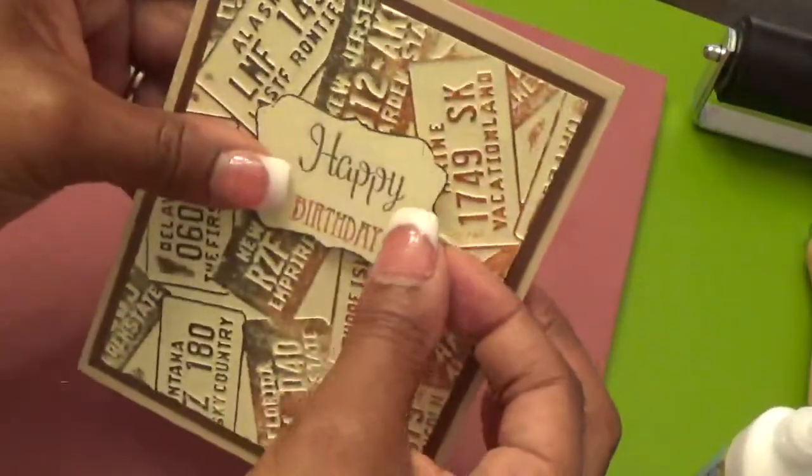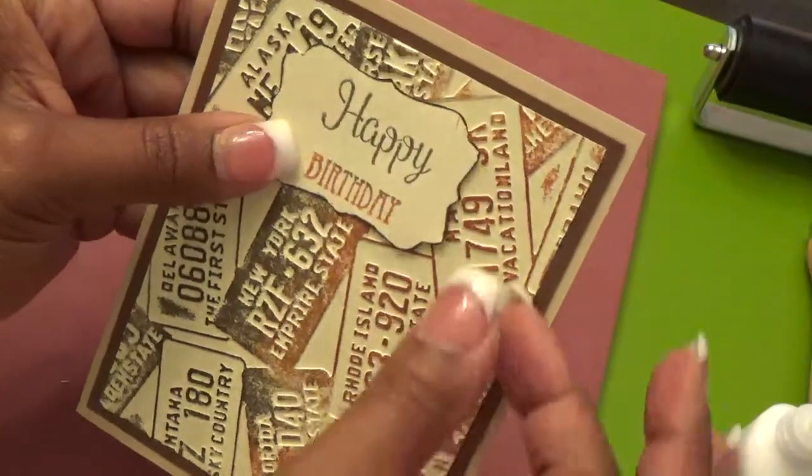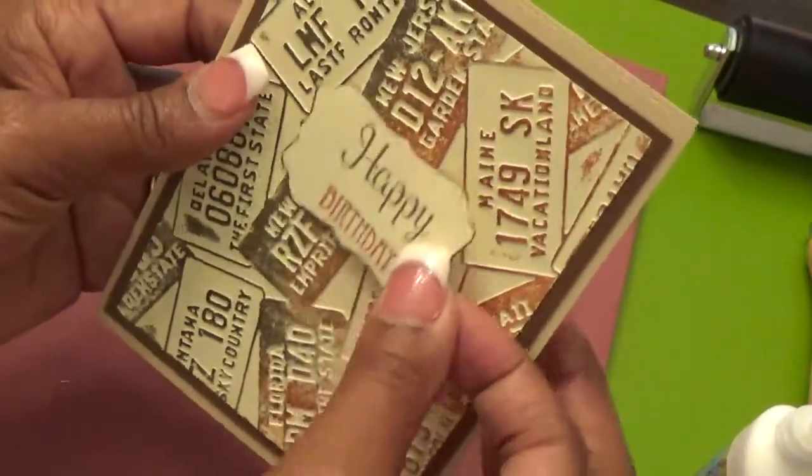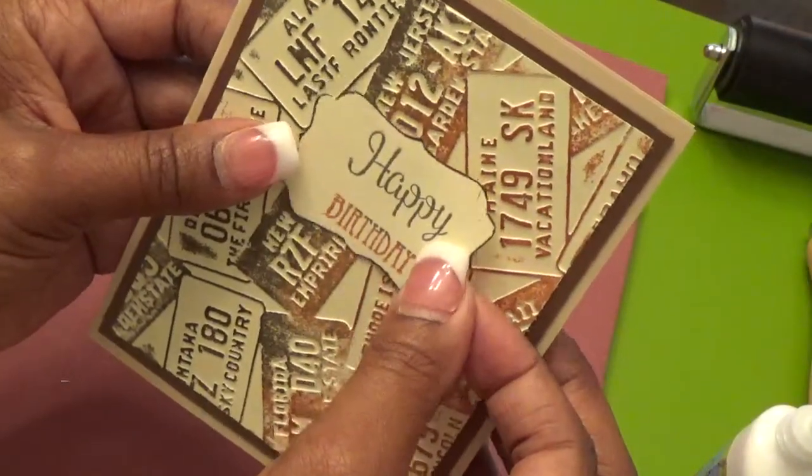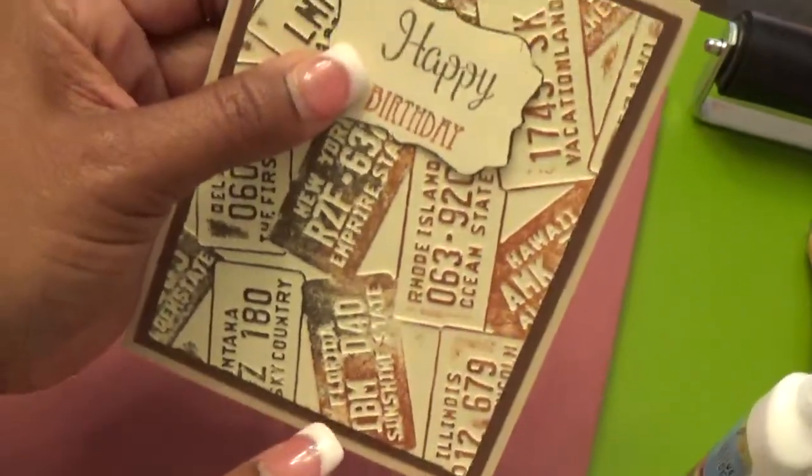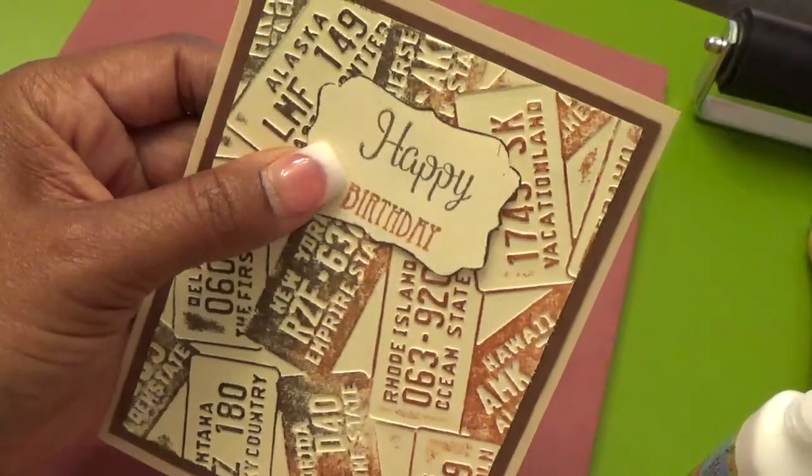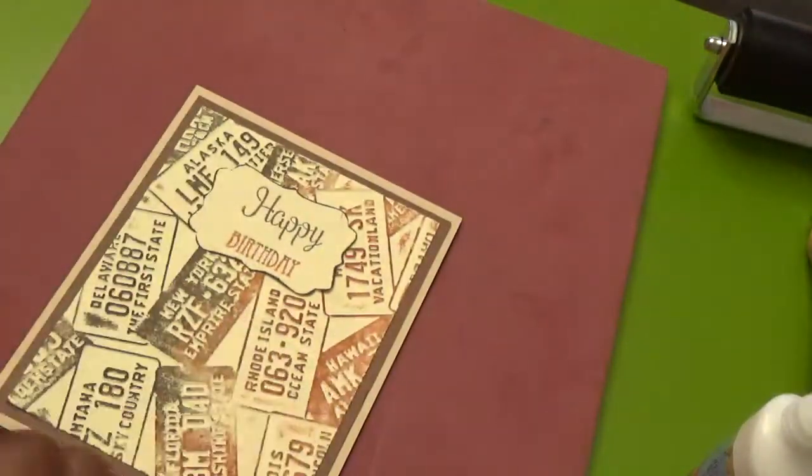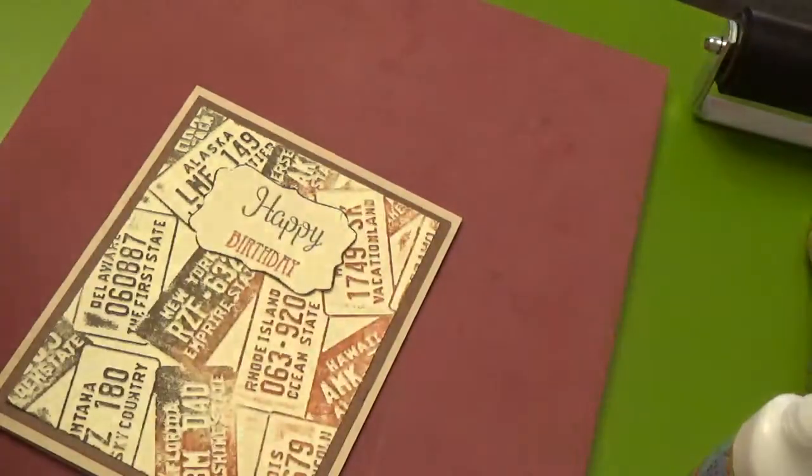And then our little sentiment. Now, we have to figure out where do we want to put it. Do we like it up there? Do we like it down here? I think I like it actually up there. So, we're just going to get our little foam dots and we're going to pop it up.